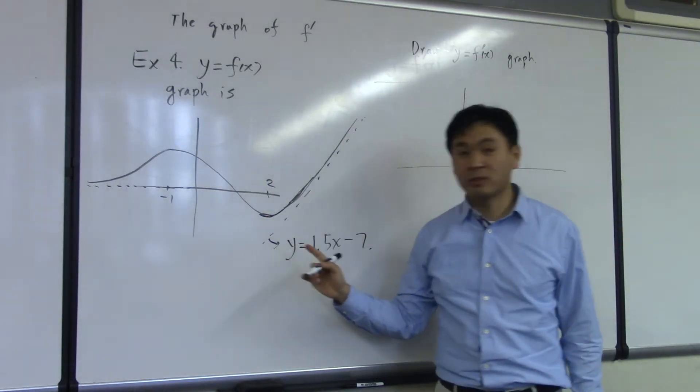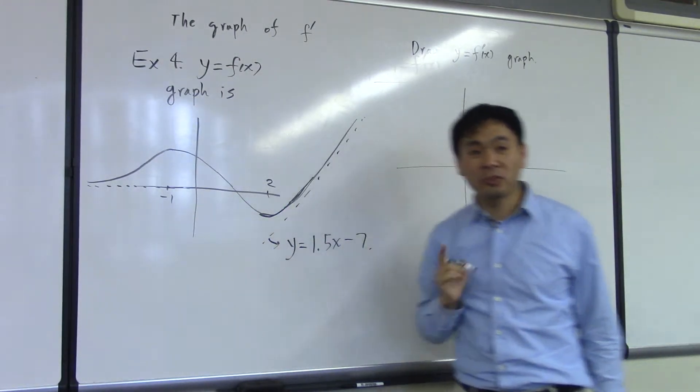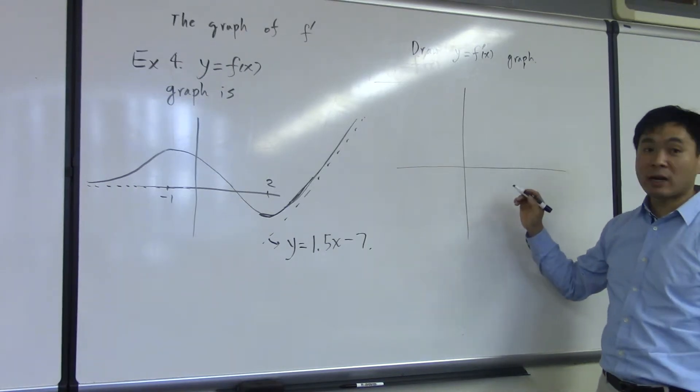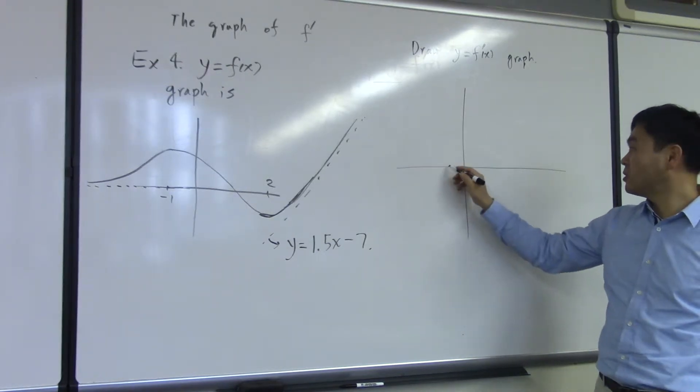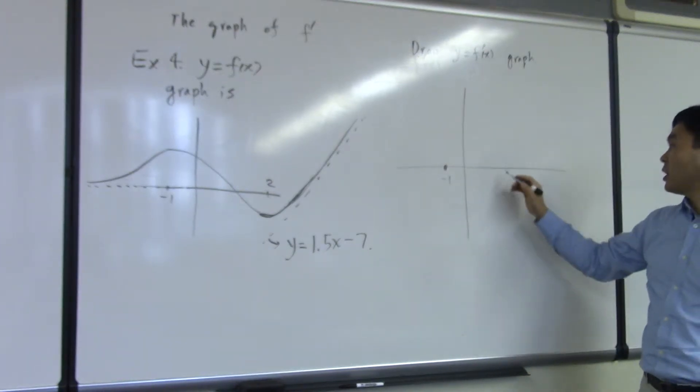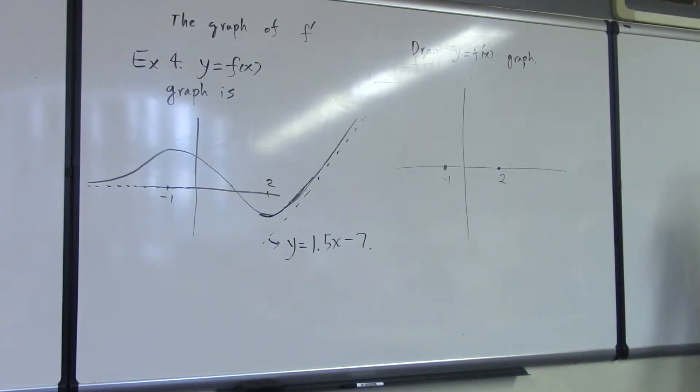When is the slope zero? At negative 1 and 2, the slope is zero, right? So where should the f prime pass through? At negative 1, it has to be zero. So let's say this is negative 1. At 2, the value of the function should be zero, right?